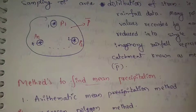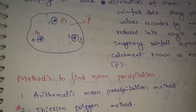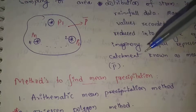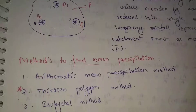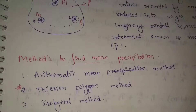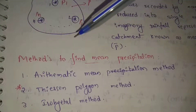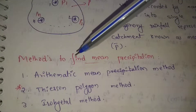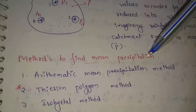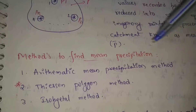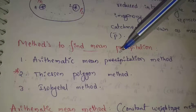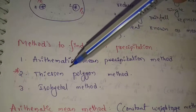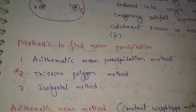If we want to find mean precipitation, we have three methods. First one is the arithmetic mean method. Second one is the Thiessen polygon method. Third one is the isohyetal method.